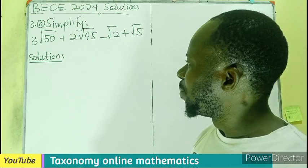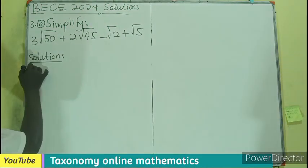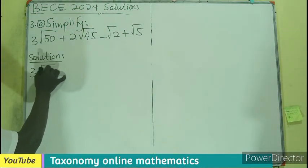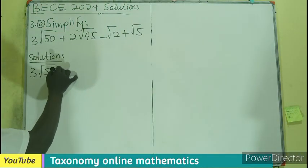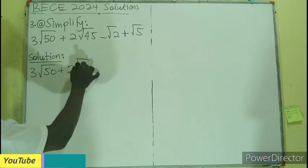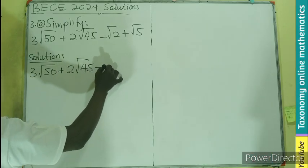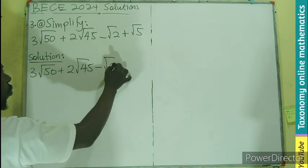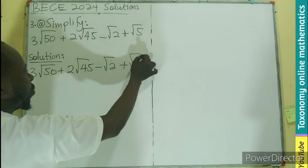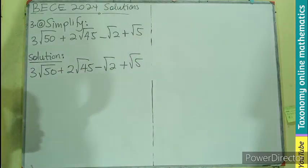We have to simplify: 3 the root of 50, plus 2 the root of 45, minus the root of 2, plus the root of 5.